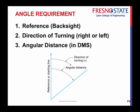So the first thing we need to understand about an angle is it has three parts to it. There's a reference, which we call a backside. There's the direction of turning, whether you're going to go to the right or to the left from where you're standing and going. And then there's an angular distance. And that angular distance is always, like we've talked before, in degrees, minutes, and seconds.